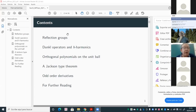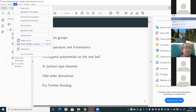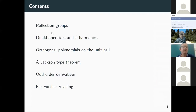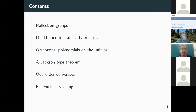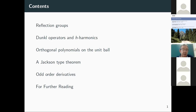These are the contents of my talk. First I'm going to talk about reflection groups. We introduce the Dunkl operator and h-harmonic polynomials related with these reflection groups, and orthogonal polynomials on the unit ball related with the Dunkl operators. Finally we will show the main result of our work in this Jackson type theory.